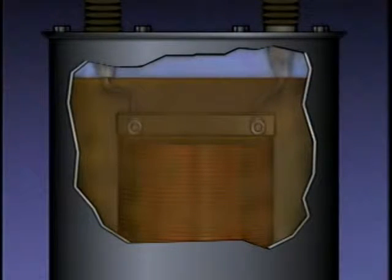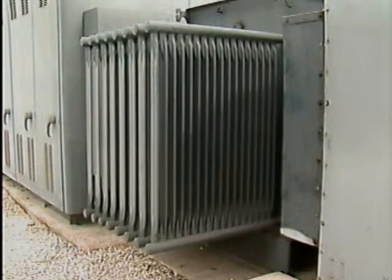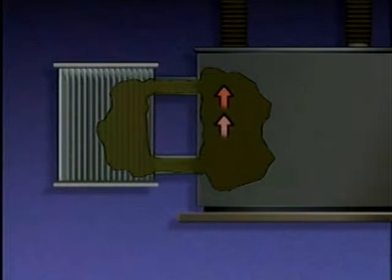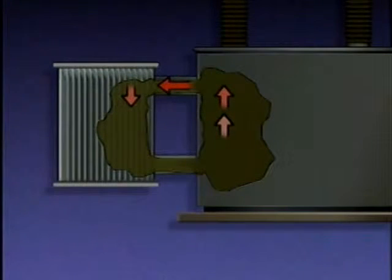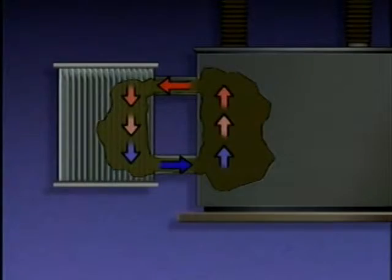Besides insulating the windings, the oil also cools them, which can produce a lot of heat during normal operation. Some oil-cooled transformers have radiators to make the cooling process more efficient. In the arrangement illustrated here, there's a natural circulation of oil. As the oil picks up heat from the windings, its density decreases, causing it to rise. The warmer oil enters the top of the radiators, where its heat is transferred through the radiators to the surrounding air. As a result, the oil becomes cooler and more dense, sinks to the bottom of the radiators, then re-enters the transformer where it can pick up more heat from the windings.